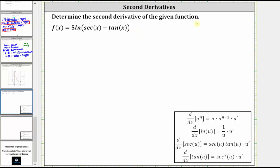We're asked to determine the second derivative of the given function. We have f of x equals five natural log of the quantity secant x plus tangent x.